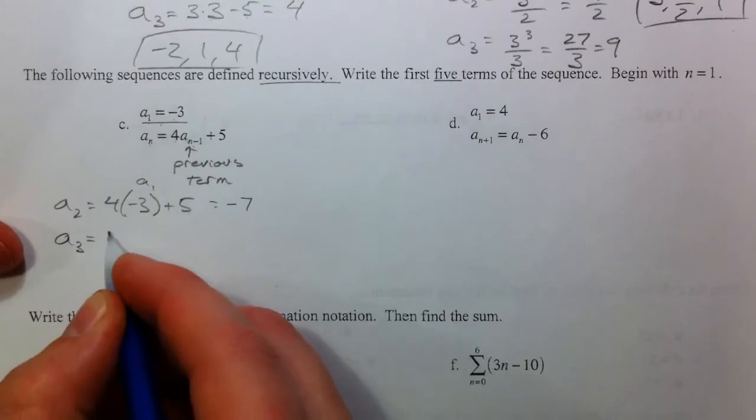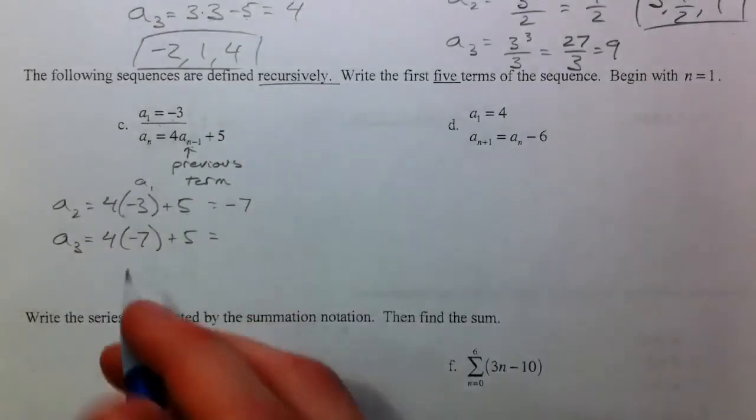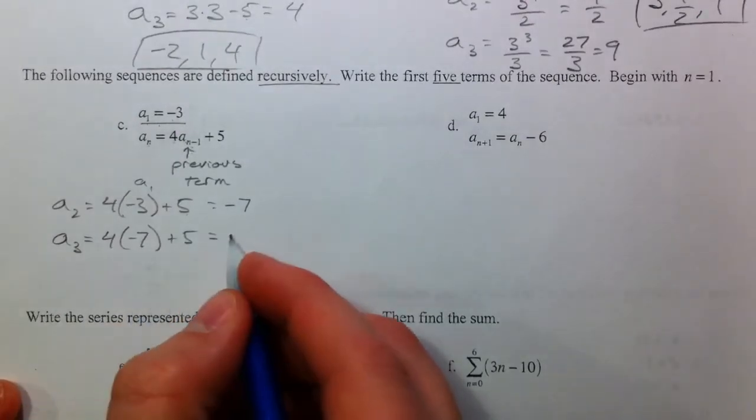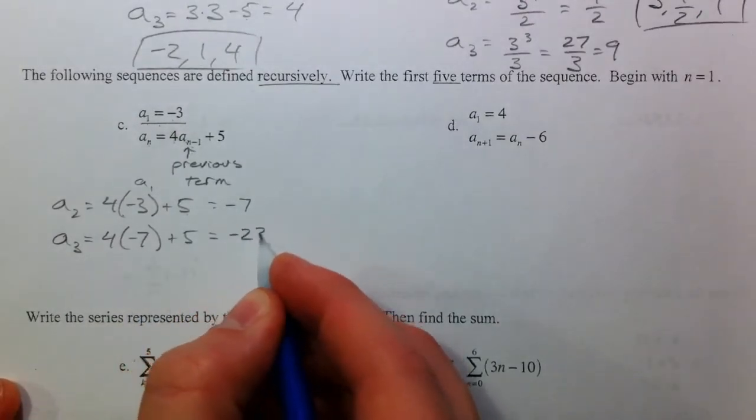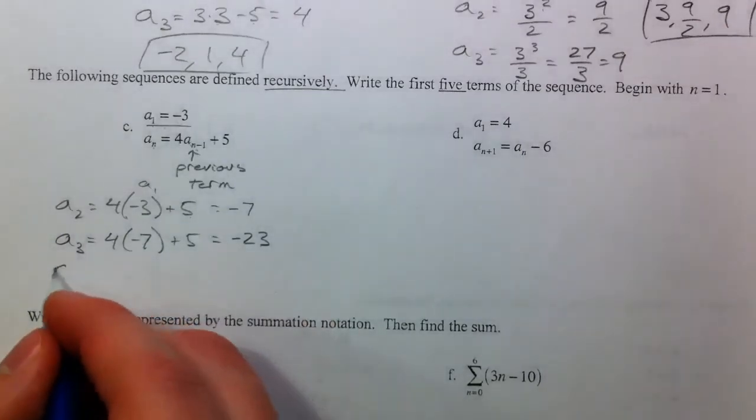a sub 3, 4 times negative 7 plus 5. So that's negative 28 plus 5 is negative 23. Just checking my work, I don't want to mess up.